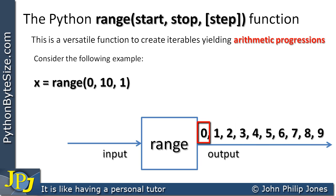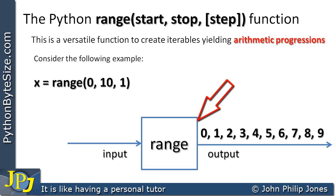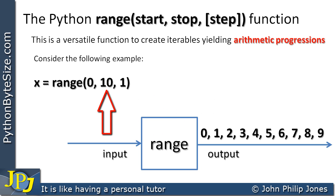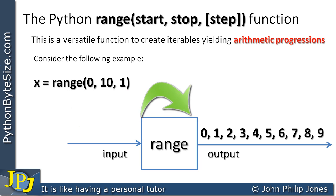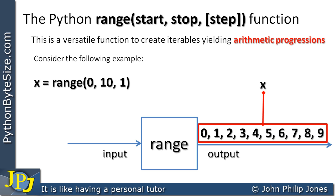Looking at the arithmetic series from range(0, 10, 1): it starts at 0 because the start was 0, then goes to 1, 2, 3 because it steps up in increments of 1. It ends at 9 even though we passed 10 as the stop value — the stop value means it stops before reaching 10, so it only goes as far as 9. This arithmetic progression is assigned to x, so x is now bound to 0, 1, 2, all the way up to 9.